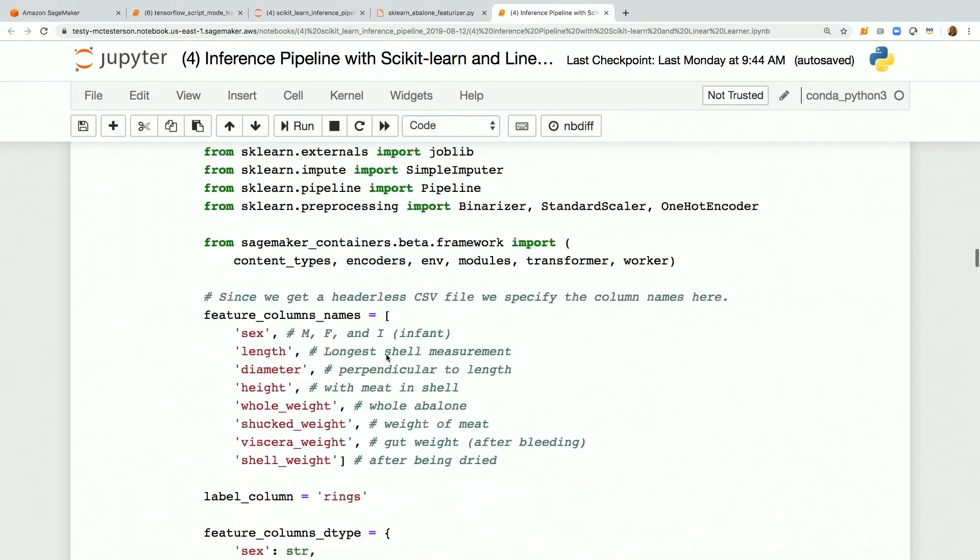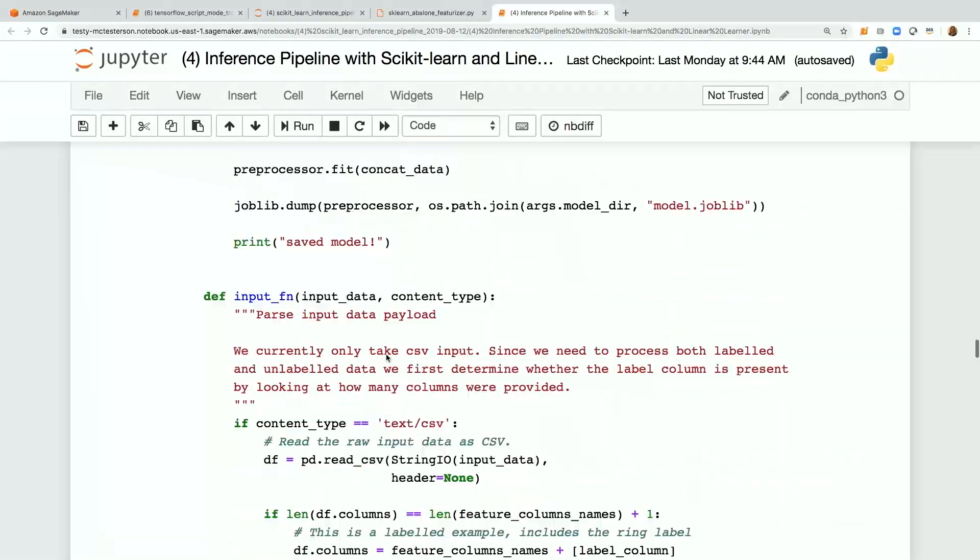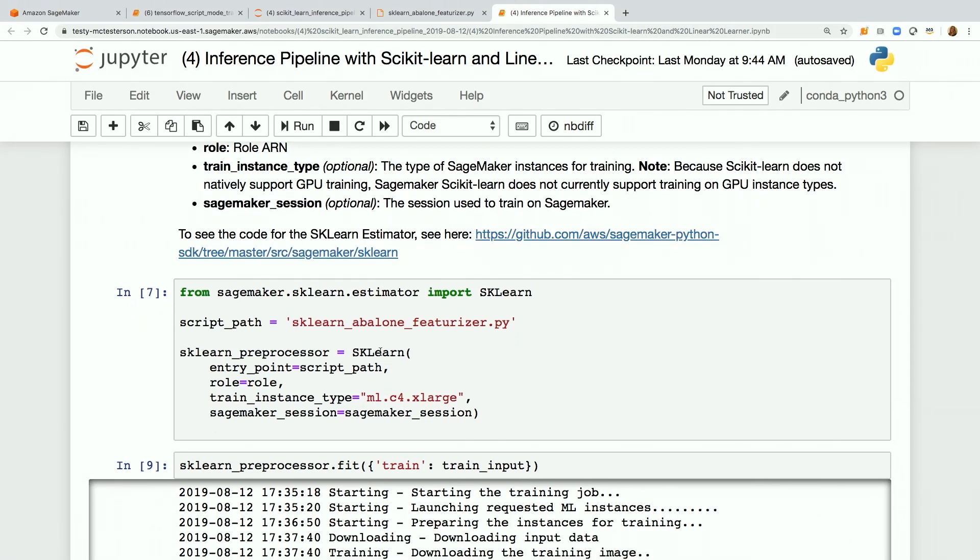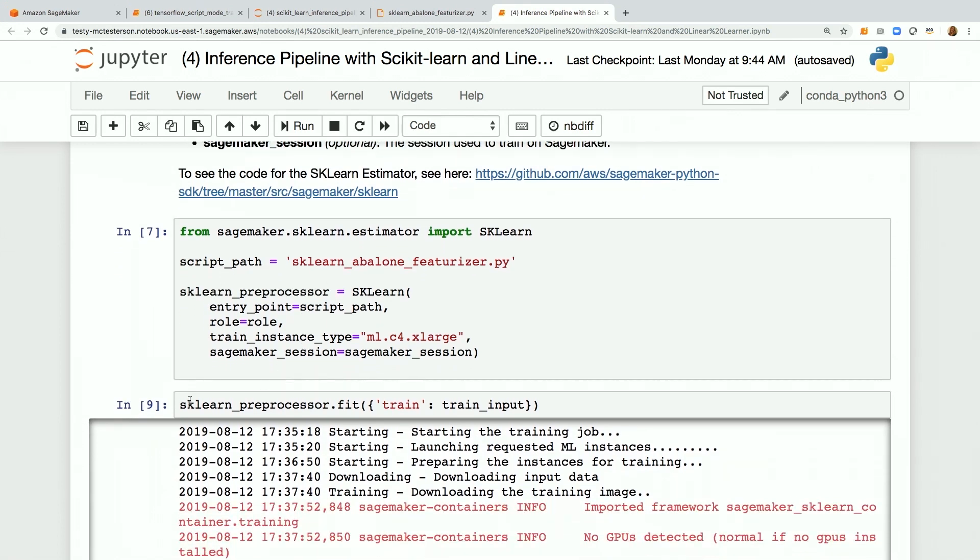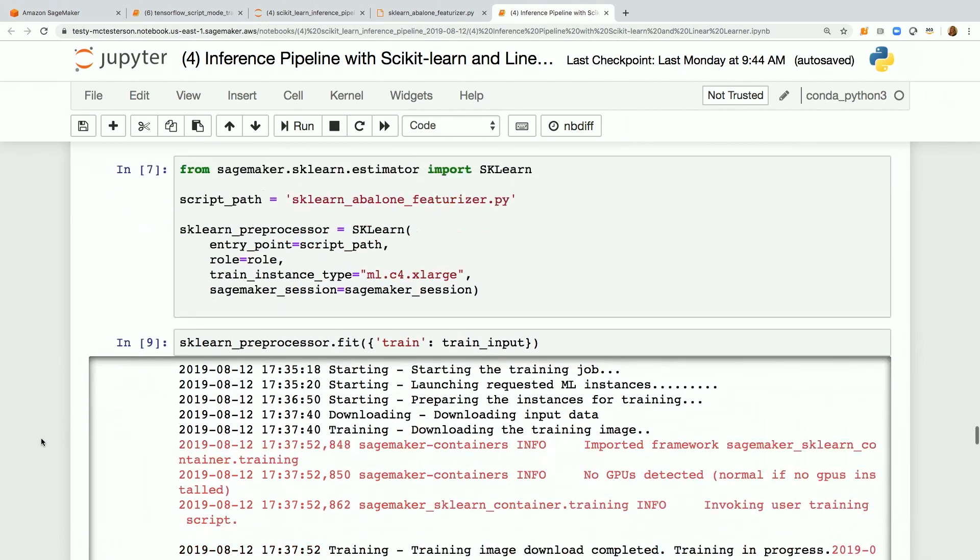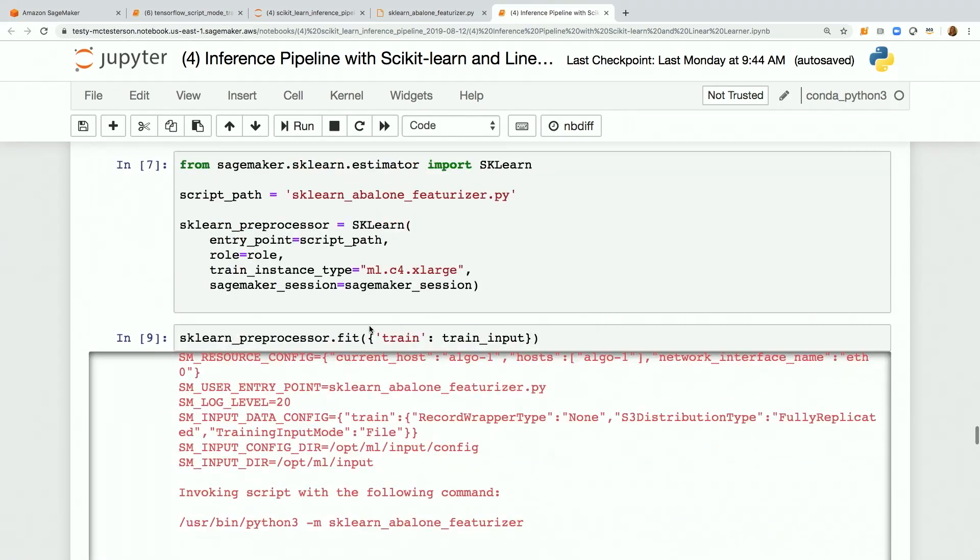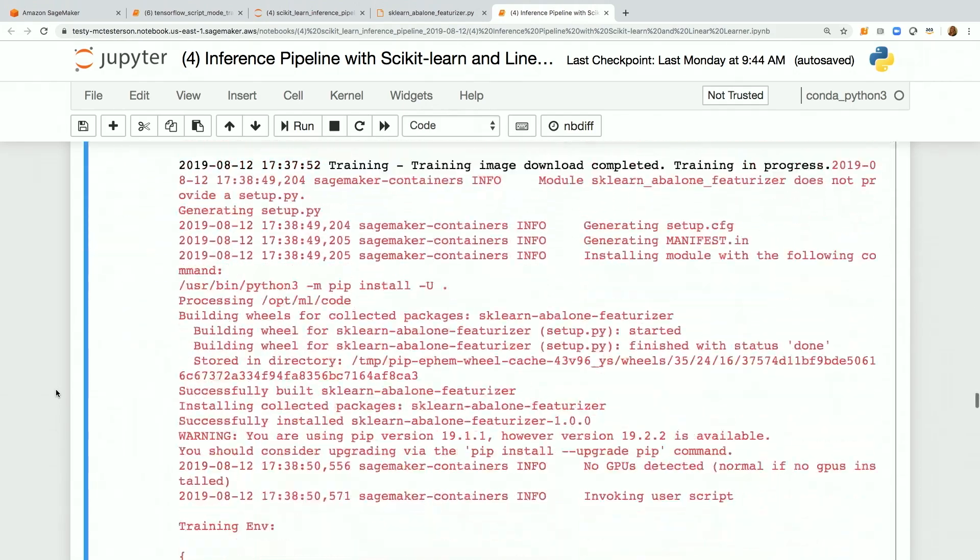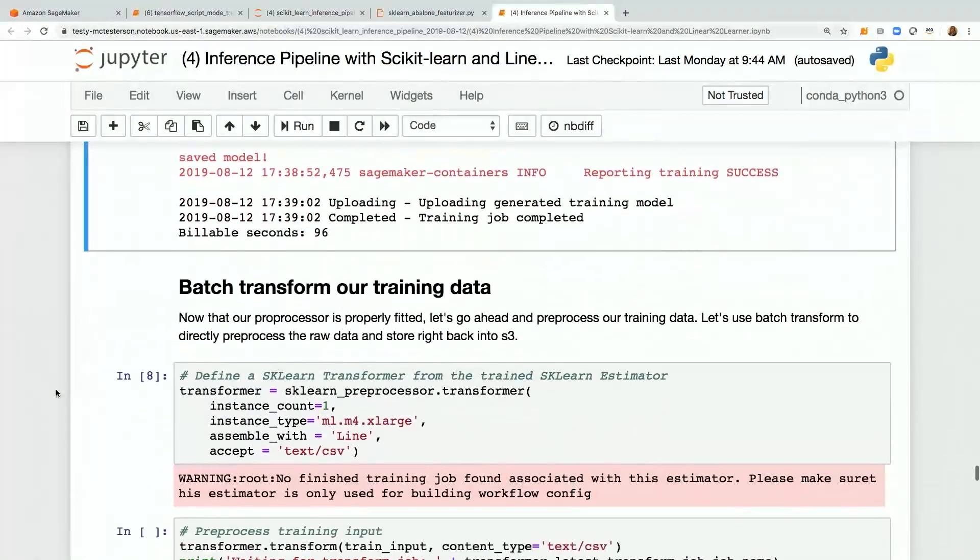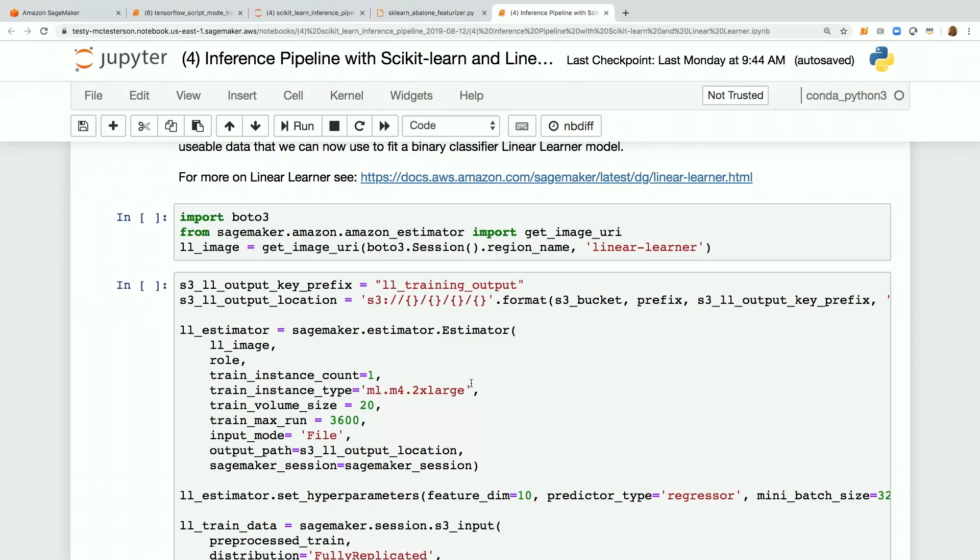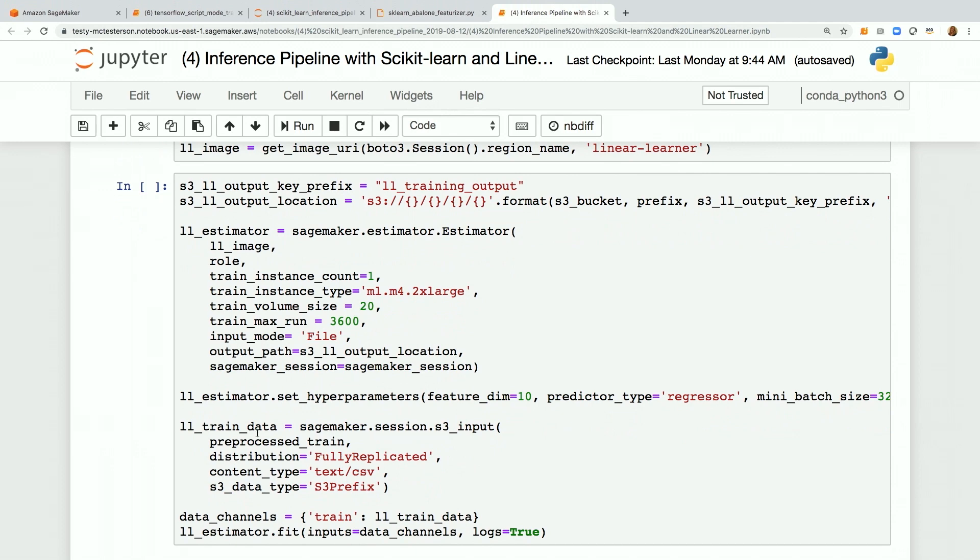Let's finish this out to see how this actually works. Back here in the rest of our notebook, we'll set up this container - scikit-learn estimator with that abalone featurizer. That is fitting the preprocessor, so that's the preprocessor that's training on a training job. Then down here, we're going to run batch transform on that. Then we're going to fit the linear model with the preprocessed data. Set our hyperparameters, call fit.